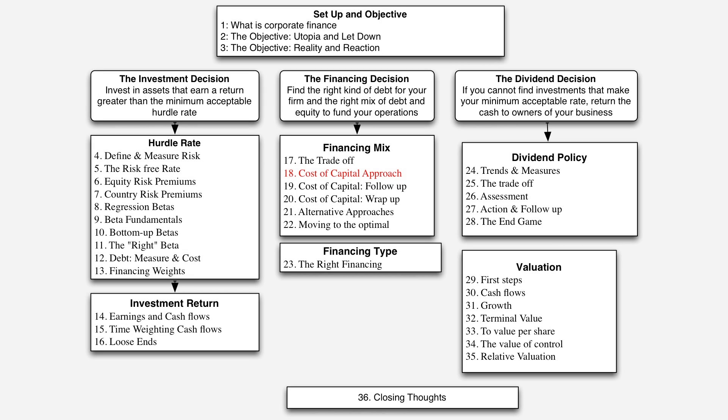We're in the middle of estimating the right financing mix for a company. In the last session, we set up the trade-off — the benefits of debt versus the cost of debt — but we didn't come up with a specific number. We could say a company can borrow more or less, but if pressed on whether it should be 50% or 80%, we wouldn't have been able to answer. So in this session, I'd like to give you a tool for assessing the optimal mix of debt and equity.